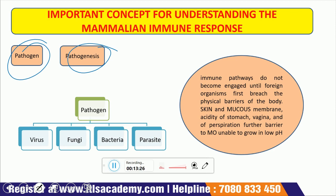Pathogenesis is the process by which a pathogen can cause a disease in the host. There are basically four types of pathogens: virus, fungi, bacteria, and parasite. All of them are capable of generating an immune response in humans or in some cases making a human very ill.